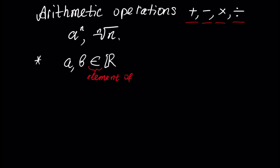Assume a and b are real numbers. When we perform an arithmetic operation with these two numbers, the result will also be some number c, which is also a real number.